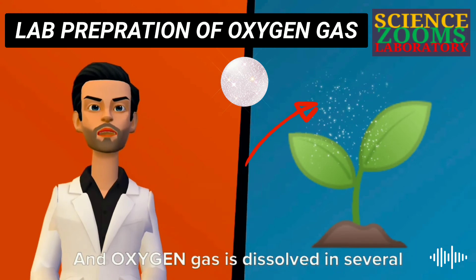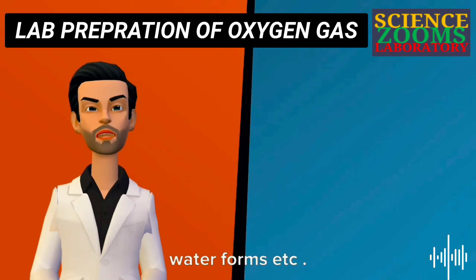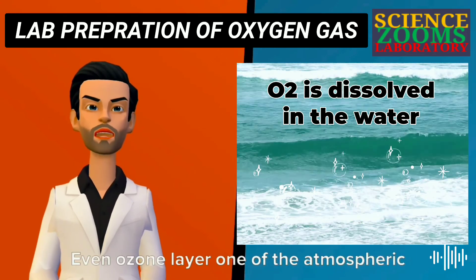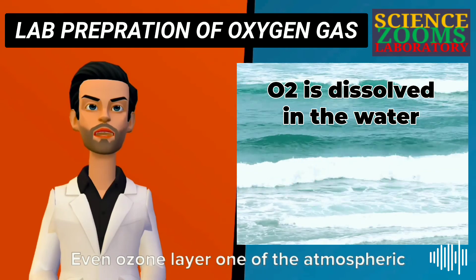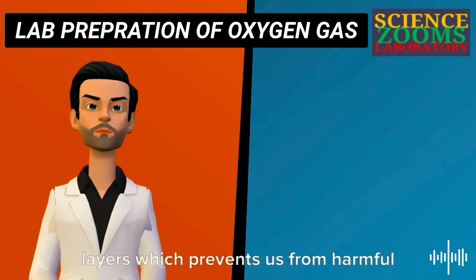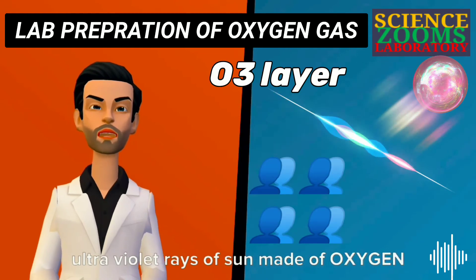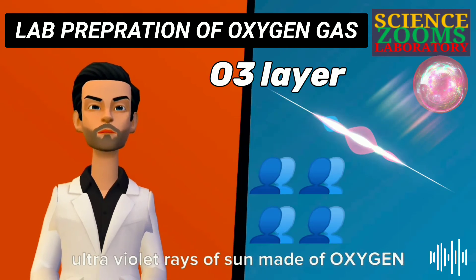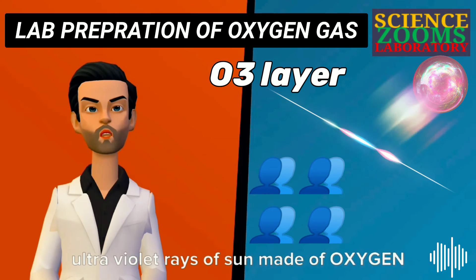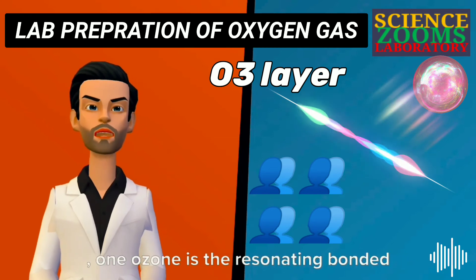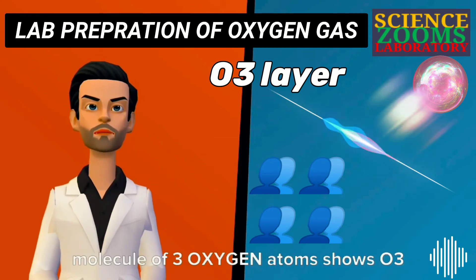Oxygen gas is dissolved in several water forms. Even the ozone layer, one of the atmospheric layers which prevents us from harmful ultraviolet rays of the sun, is made of oxygen. Ozone is a resonating bonded molecule of three oxygen atoms, shown as O₃.